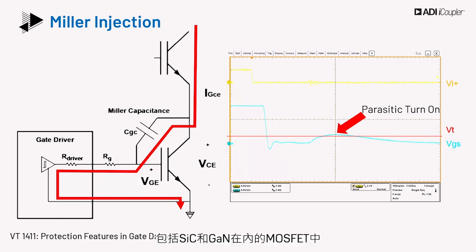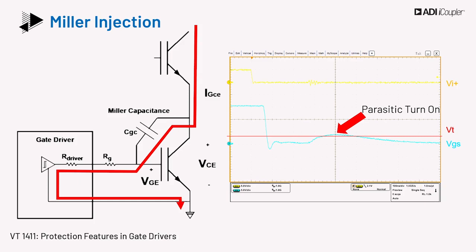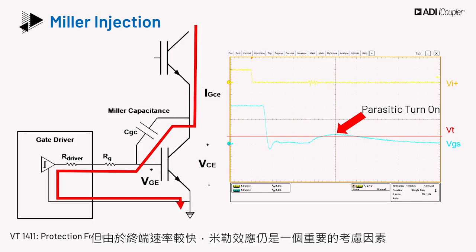A similar gate-to-drain capacitance CGD is present in MOSFETs, including SiC and GaN. Even though the value of CGD in wide bandgap devices may be lower, the Miller effect is still a big consideration due to faster edge rates.